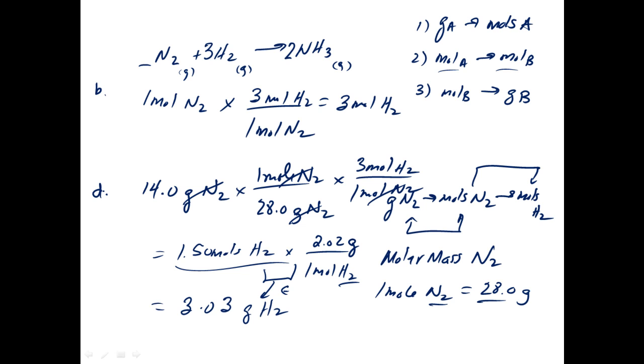Part C is, let's see. Yeah, part C, how many moles of product would be formed if I had one mole of nitrogen? Yeah, let's do that. One mole of nitrogen. Again, all we're looking at is the mole to mole ratio. For every one mole of nitrogen, we get two moles of ammonia. So my answer here would be two moles of ammonia.